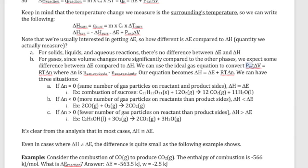Using the ideal gas equation, p-external times delta V equals RT times delta n. The change in moles of gas, delta n, is moles of gas products minus moles of gas reactants. If delta n equals zero, then delta H and delta E are exactly equal. For example, in sucrose combustion the oxygen count is 12 moles on the left and 12 on the right — delta n is zero. So delta H equals delta E for that reaction.